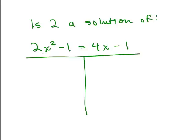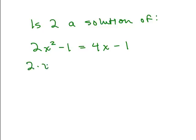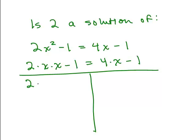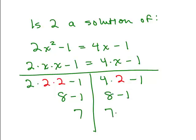Let's redo the same problem by rewriting 2x squared a bit differently before plugging in. Remember, 2 times x squared means 2 times x times x minus 1, and the right side is 4 times x minus 1. You can expand the exponent as multiplication first, then plug in 2: you get 2 times 2 times 2 minus 1, which is 8 minus 1 or 7. The right side gives 4 times 2 minus 1, also 8 minus 1 or 7. Same answer — yes, it's a solution. This approach eliminates dealing with exponents directly.